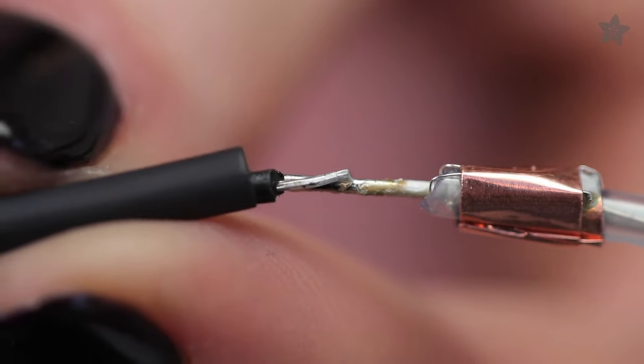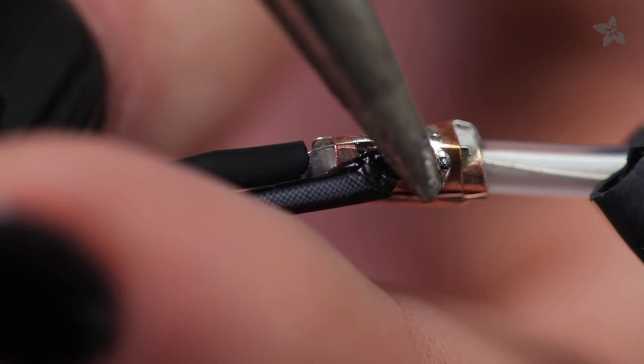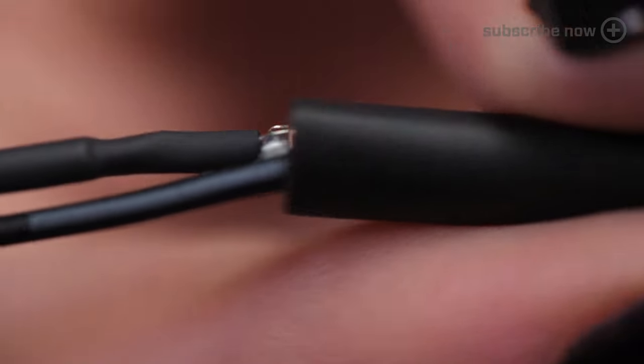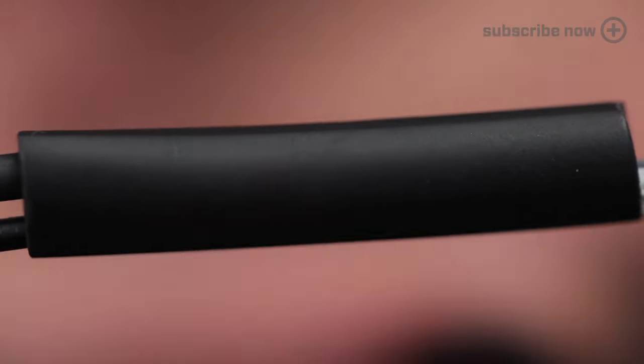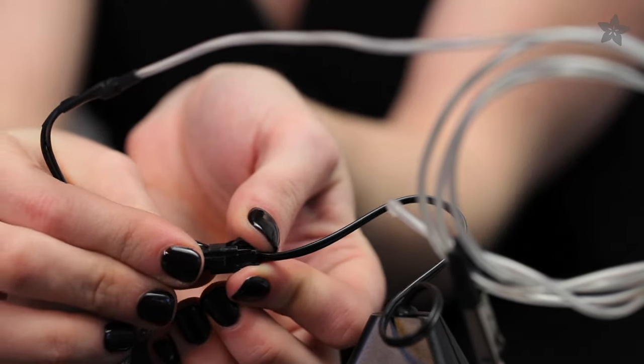Slide and shrink that small piece of heat shrink and repeat to join the longer wire to the copper tape. Lastly, slide the larger heat shrink tubing over the whole deal and shrink it down. Test it by plugging it in and powering it up.